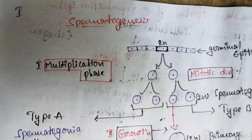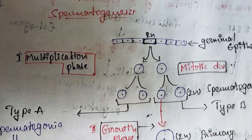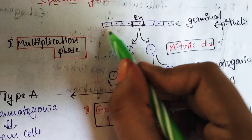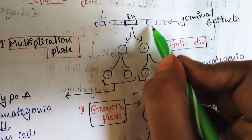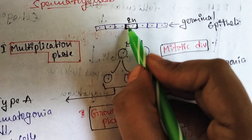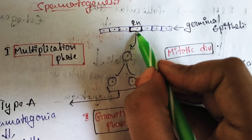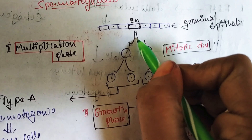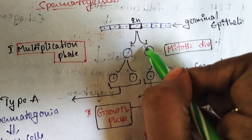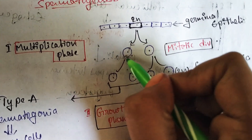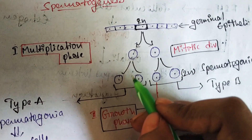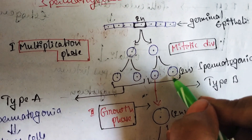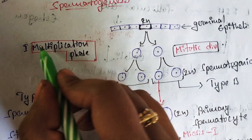In the seminiferous tubules, germ cells are present in the germinal epithelial layer. Each cell has diploid chromosomes and undergoes division to form two daughter cells. After mitotic division, four daughter cells are formed. This is the first phase — the multiplication phase.